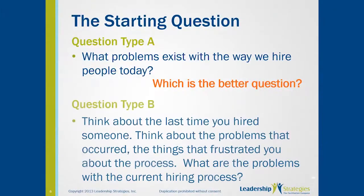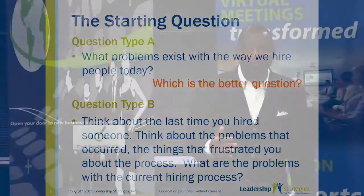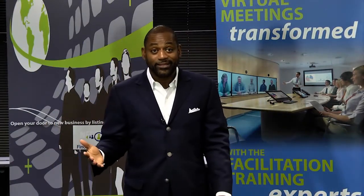A different way to ask the question is what we call the Type B question. Think about the last time you hired someone. Think about the problems that occurred, the things that got in the way, the things that made you say, we've got to fix this process. What are the problems with the current hiring process? So let's ask: which is the better question, Type A or Type B?